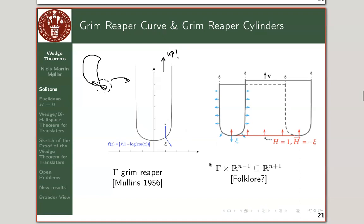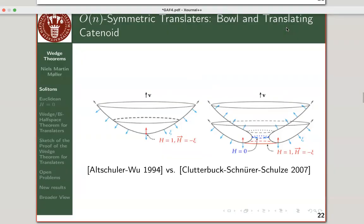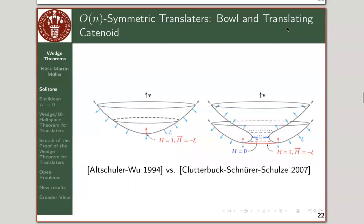And here is the Grim Reaper cylinder, which is what we mean by crossing with R^(n−1). The rotationally symmetric translators look like this: the ones that look a bit like a paraboloid, found by Altschuler and Wu in 1994, translate upwards.